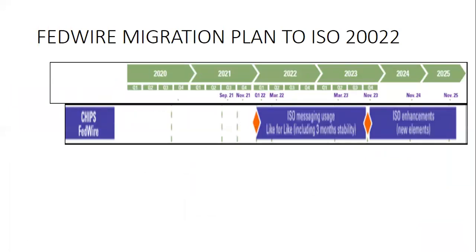Importantly, after November 2025, FedWire will no longer use this proprietary message format. The world is migrating to ISO 20022 to enable a common language, interoperability, and enhanced data for both local and international payments. The FedWire migration timeline starts from Q1 2022 with a like-for-like migration including three months of stability, followed by ISO enhancements and new elements, with full completion by November 2025.